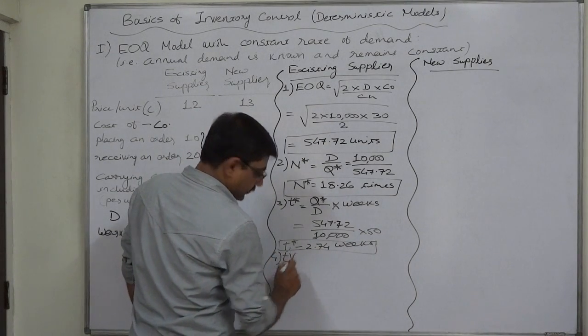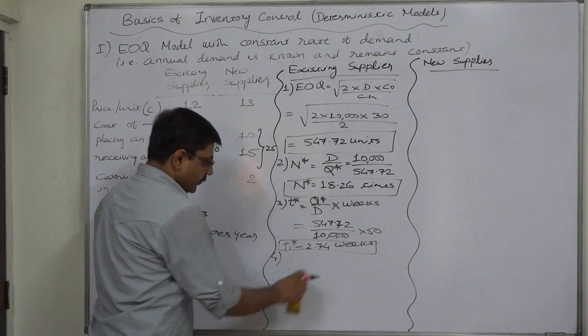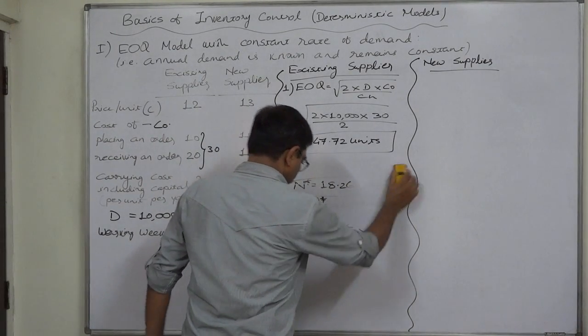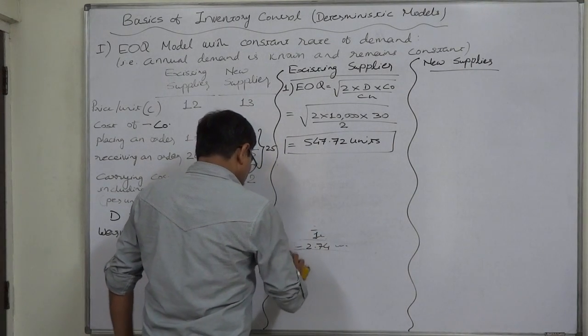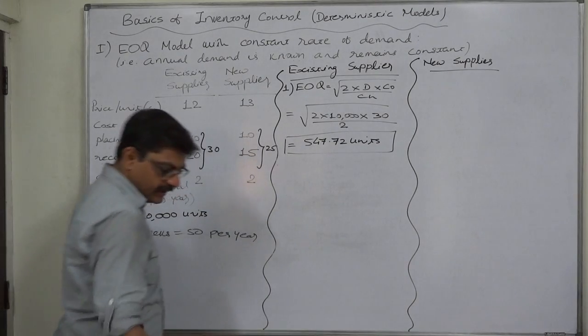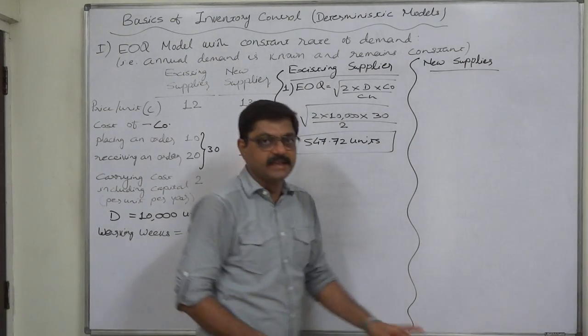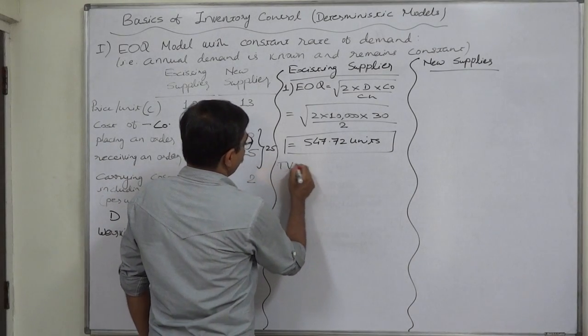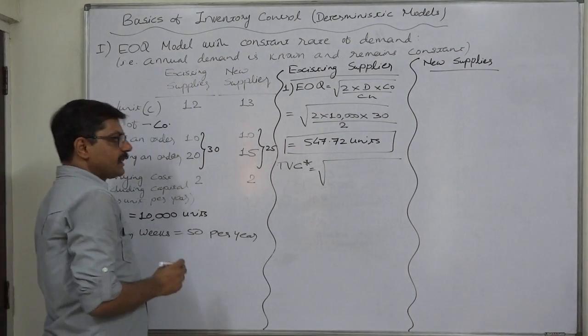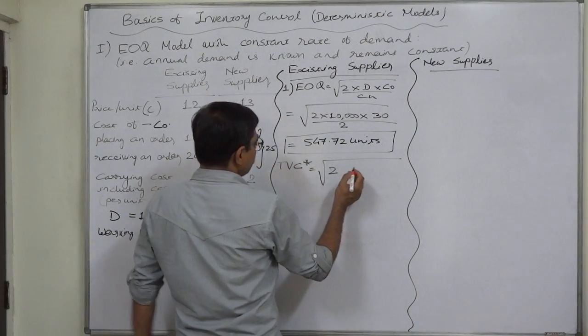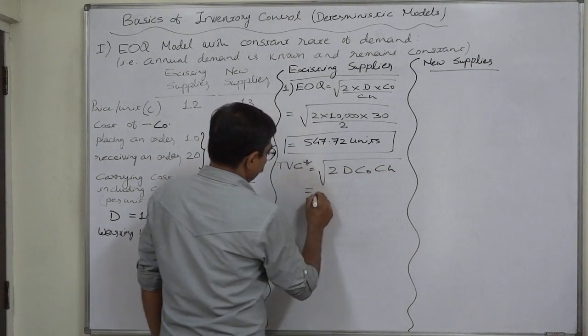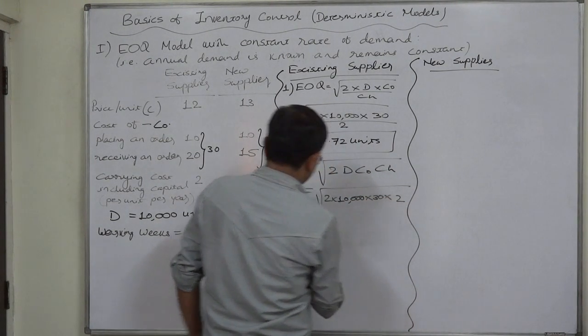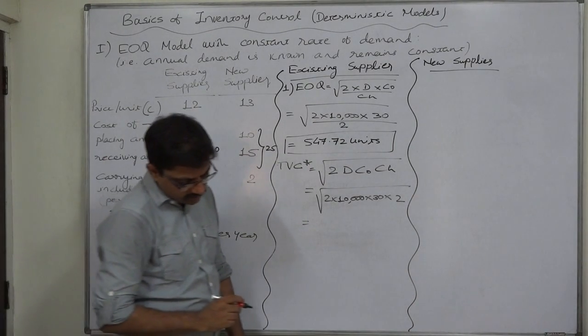Now let us calculate TVC, total variable cost, because we are actually interested in calculating costs. We have to make comparison of costs so that the economic or monetary effect of the change in supplier, if the change in supplier takes place, should be only on the basis of monetary effect of the decision. Let us calculate total variable cost. Here we believe that EOQ is our ordering quantity, so we can calculate the TVC directly: square root of 2DCO times CH. Square root 2 into 10,000 into 30 into 2. It gives rupees 1095.49.